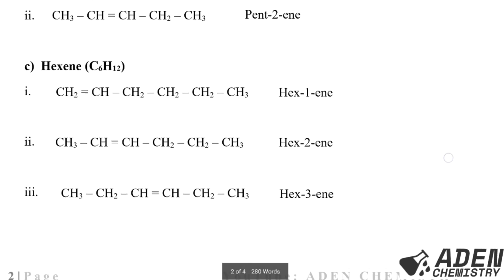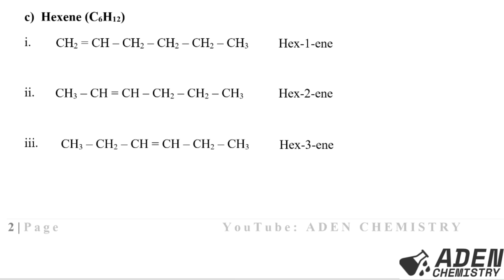We proceed to hexene. Hexene has C6H12 as its molecular formula. The first isomer has the double bond on the first carbon — hex-1-ene. Next, we move the double bond to the second carbon — hex-2-ene. The third, we move it to the third carbon — hex-3-ene. If you read from either side, the double bond is on the third carbon. So hexene has three positional isomers: hex-1-ene, hex-2-ene, and hex-3-ene.